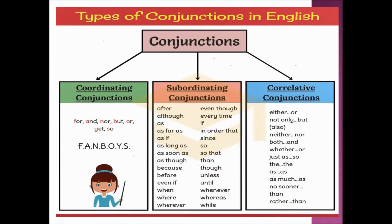So these are some subordinating conjunctions. Now let's see about correlative conjunctions. Correlative conjunctions include: either/or, not only/but also, neither/nor, both/and, whether/or, just as/so, the/the, as/as, as much as, no sooner/than, and rather/than.